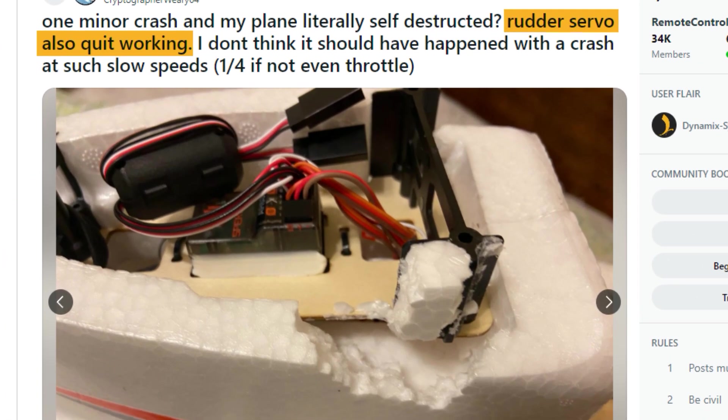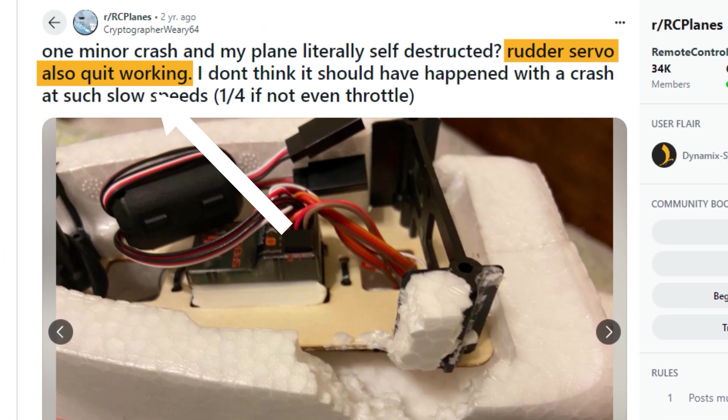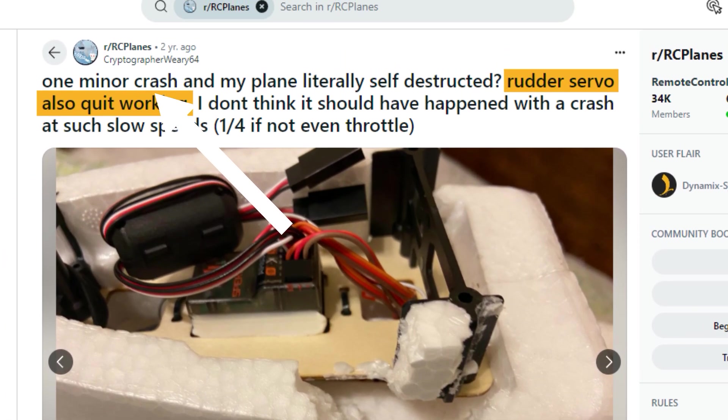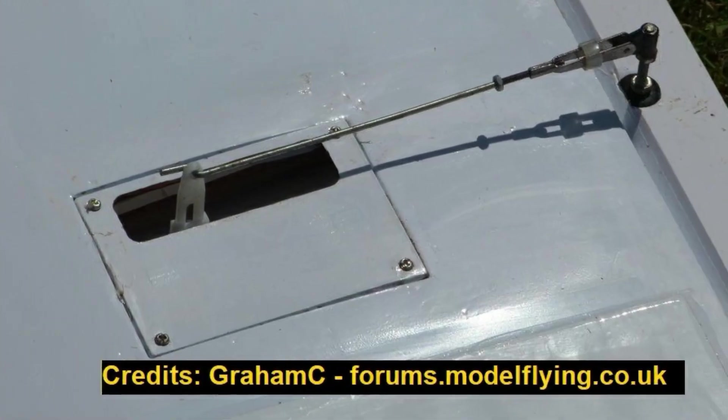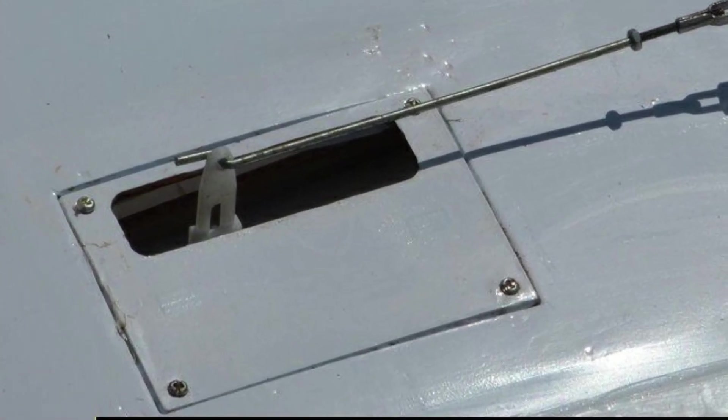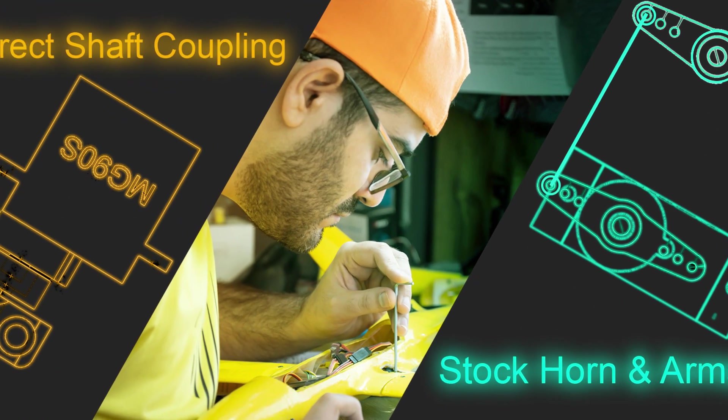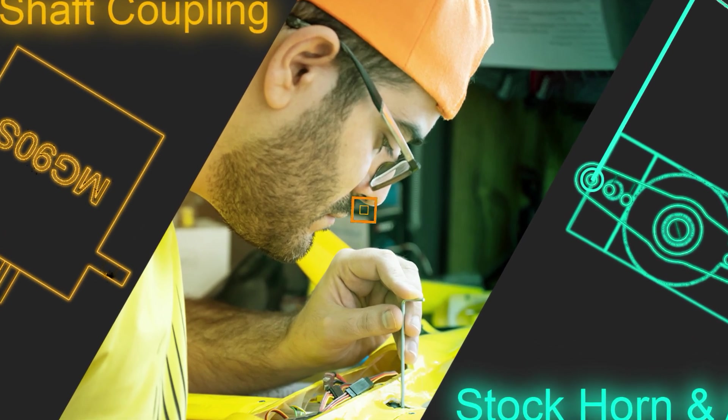During a hard landing or a crash, your servos and connections can get damaged, or even the area of the internal structure which the servo is installed on. And here's the advantages of direct shaft couplers.